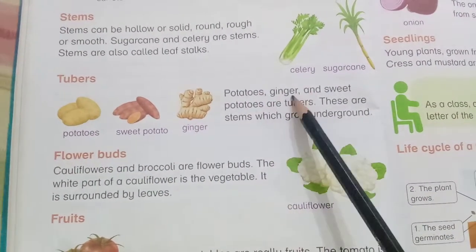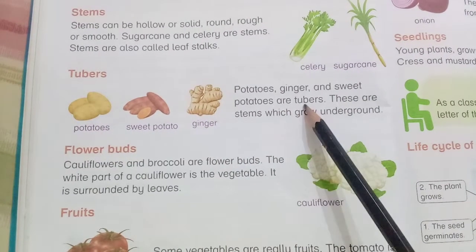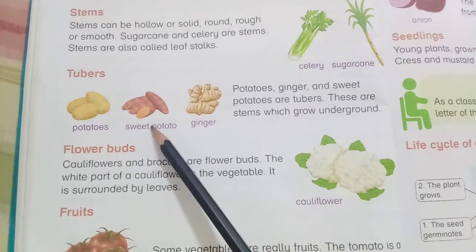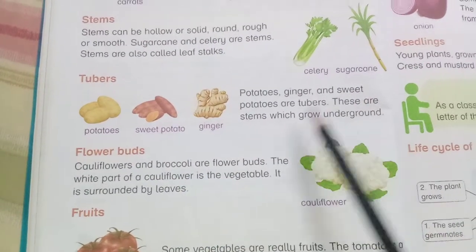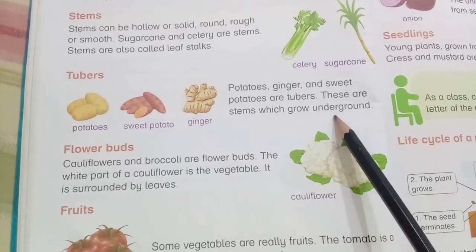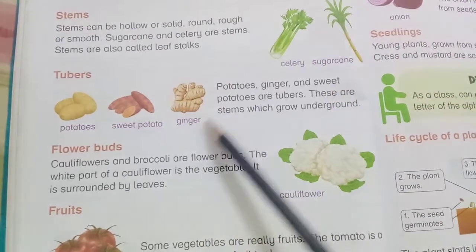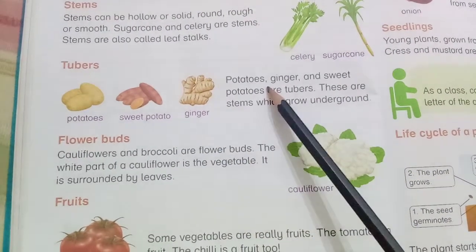Potato, ginger and sweet potatoes are tubers. These are stems which grow underground.